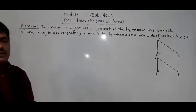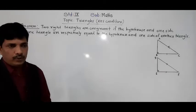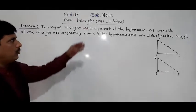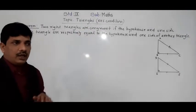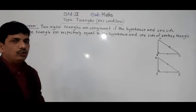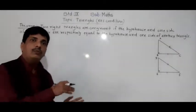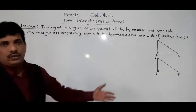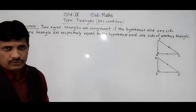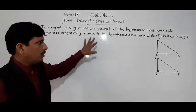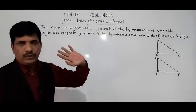In this condition, both triangles are congruent — that we are going to prove. But directly we cannot use the RHS condition here. We have to give proof for the RHS condition with the help of whatever conditions we have previously learned.